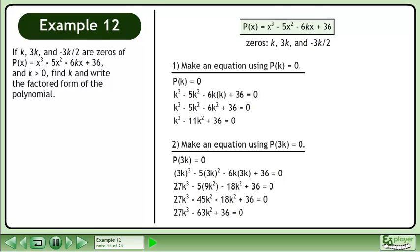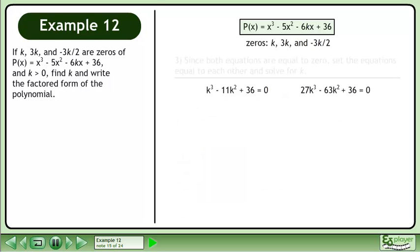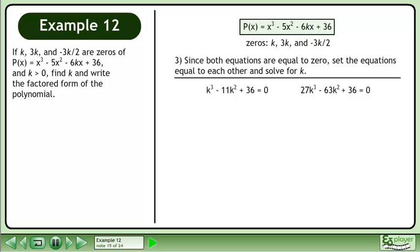Now we'll move on to the third step in our strategy. Since both equations are equal to zero, set the equations equal to each other and solve for k. Set the polynomials equal to each other. Bring all of the terms on the left side of the equation to the right side. This gives us 0 = 26k³ - 52k².